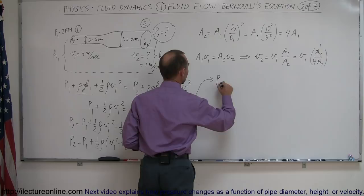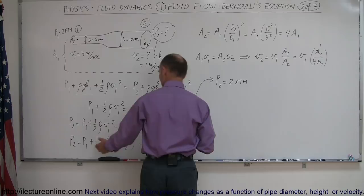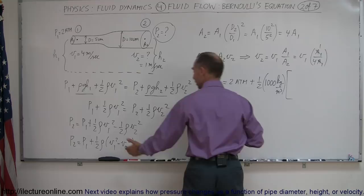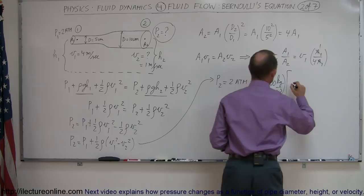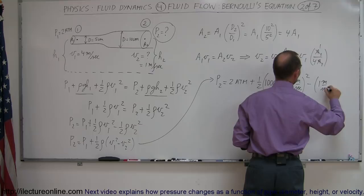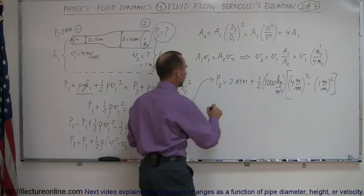P2 is equal to P1, which is 2 atmospheres. We don't have to convert that to Pascals. Plus 1 half times the density, assuming that this is water, the density of water is 1,000 kilograms per cubic meter. And then I multiply that times V1 squared minus V2 squared. V1 squared was 4 meters per second, so that's 4 meters per second. We have to square that minus V2, which was only 1 meter per second. We have to square that.